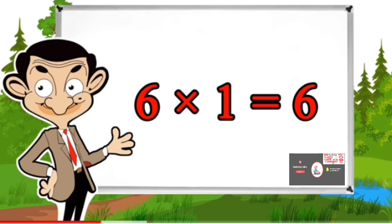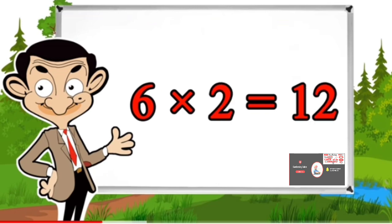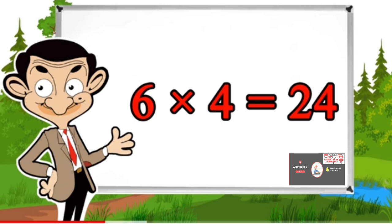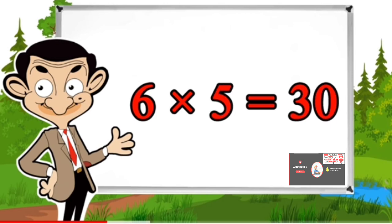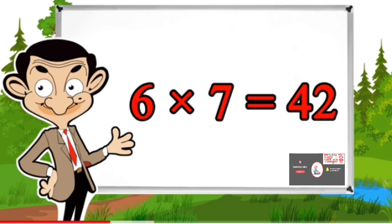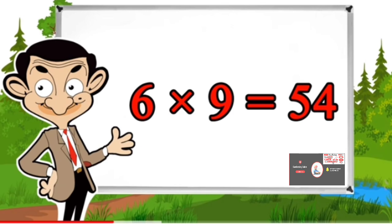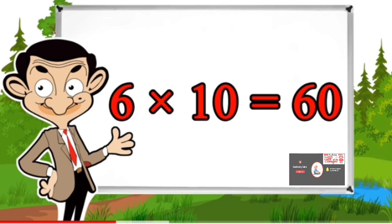Table of 6: 6×1=6, 6×2=12, 6×3=18, 6×4=24, 6×5=30, 6×6=36, 6×7=42, 6×8=48, 6×9=54, 6×10=60.